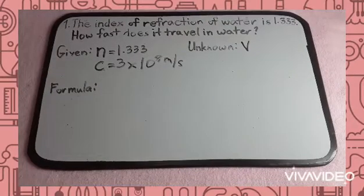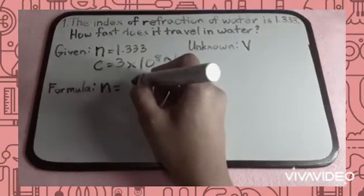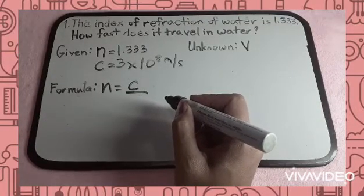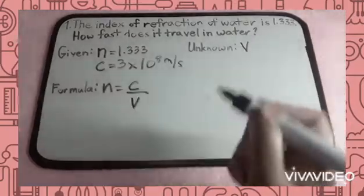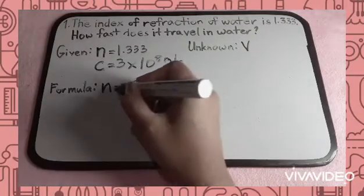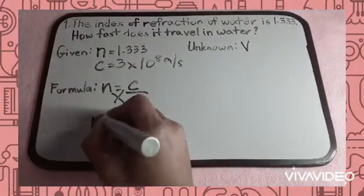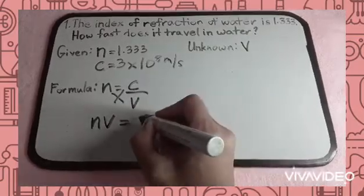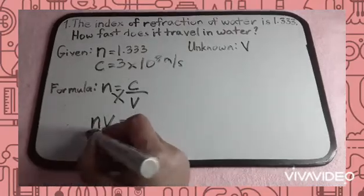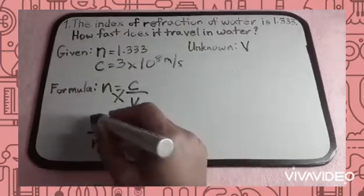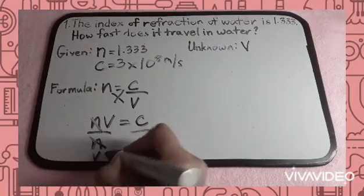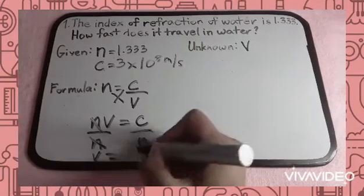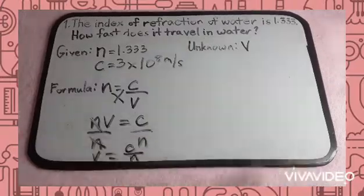For our formula, we will be using the formula for index of refraction, equivalent to the speed of light in vacuum divided by the speed of light in the medium, which is the water. To derive the formula, let's cross multiply. The index of refraction times the speed of light in water is equivalent to the speed of light in vacuum. Divide both sides by the index of refraction to cancel it out. The formula for the speed of light in water is equivalent to the speed of light in vacuum divided by the index of refraction.